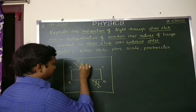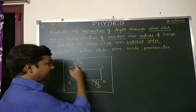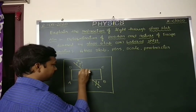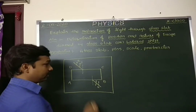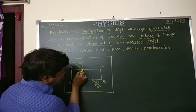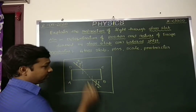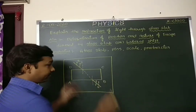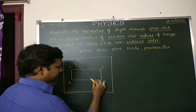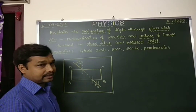We draw a normal at this point, then extend or join the line RS so it touches the DC side at that point. Again we draw a line from there connecting through, which gives us the refracted ray inside the glass slab. This shows the path of refraction inside the glass slab — the light ray comes in, gets refracted inside, and comes out the other side.